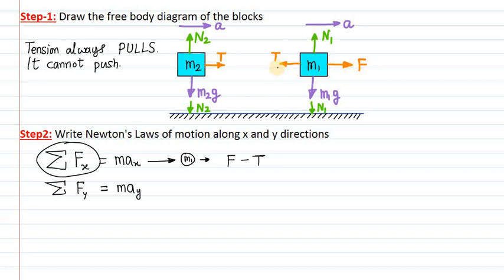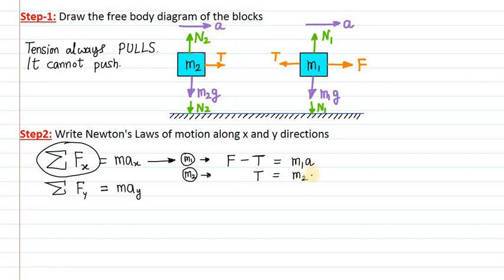So F minus T equals M1 times A. This is equation number 1. Now applying the same equation for block M2: along the X direction, the only force is tension T. So T equals M2 times A. This is equation number 2. We now have two equations, and from these two equations we can find both unknowns.